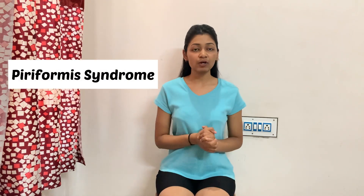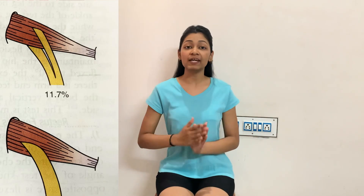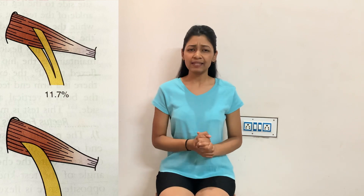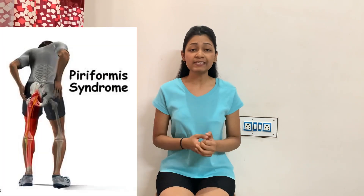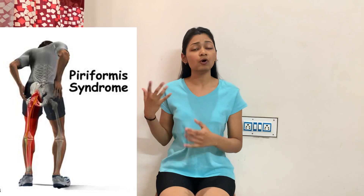Hello everyone and welcome back to my YouTube channel, Physios Healing. Today I will tell you how to detect tightness in some lower limb muscles through tests. Detecting tightness in muscles is really important if you want to diagnose orthopedic conditions such as piriformis syndrome. In this syndrome, some part of the sciatic nerve or the whole sciatic nerve passes through the piriformis muscle, and when this muscle becomes tight it compresses the sciatic nerve, producing pain in the leg and all the symptoms of sciatica.